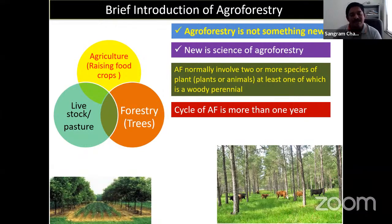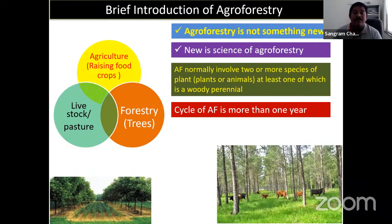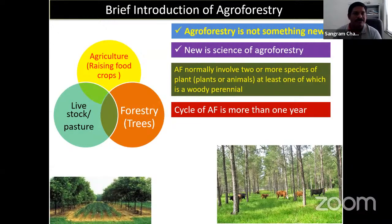When two to three components are mixed together, there is always some complexity — sometimes giving a negative result, sometimes reducing yield, or causing other calamities like destruction of soil resources. By keeping all three components — agriculture, forestry, and livestock — the science of agroforestry has emerged.